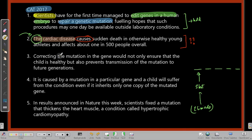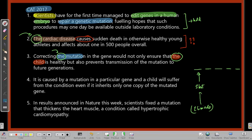Sentence four: 'Correcting the mutation — the gene would not only ensure that the child is healthy but also prevents transmission of the mutation to future generations.' Here, 'the mutation' and 'the child' both use the definite article, requiring logical antecedents. This sentence is very unlikely to be the start. Sentence five: 'It is caused by a mutation in a particular gene and a child will suffer from the condition even if it inherits only one copy of the mutated gene.' The word 'it' also requires an antecedent — also unlikely to be the start.